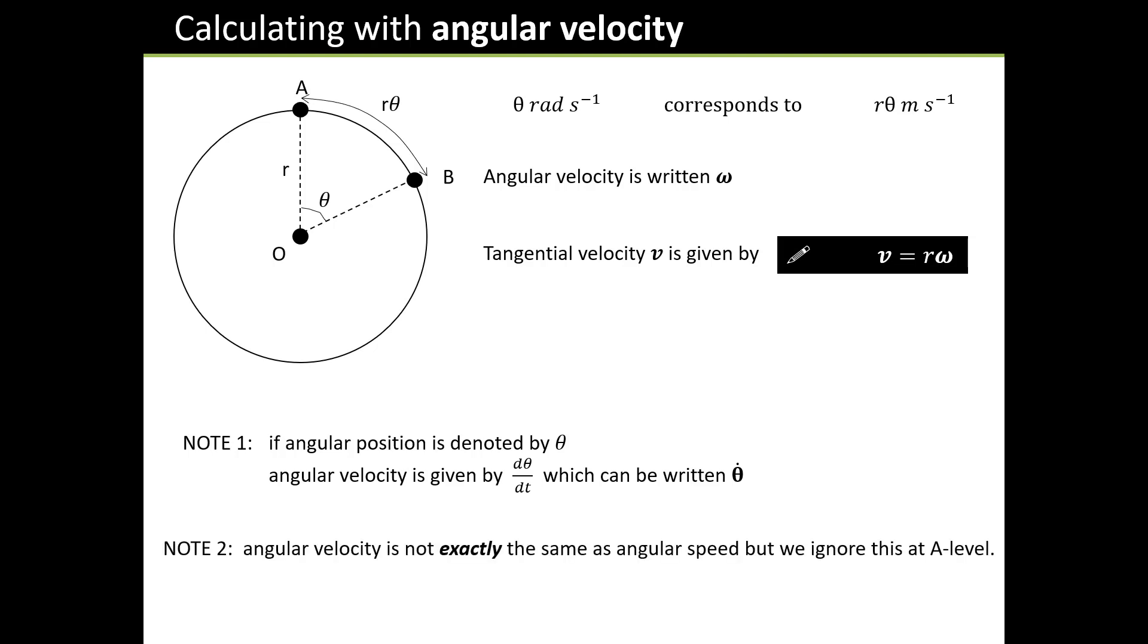The second note is, if I say velocity, it ought to have a direction because velocity is a vector. Well, what on earth is the direction of the angular velocity? It's actually to do with the axis of rotation, but we don't get involved with it at A level. So although I'm going to use the term angular velocity, what we're really talking about here is angular speed.